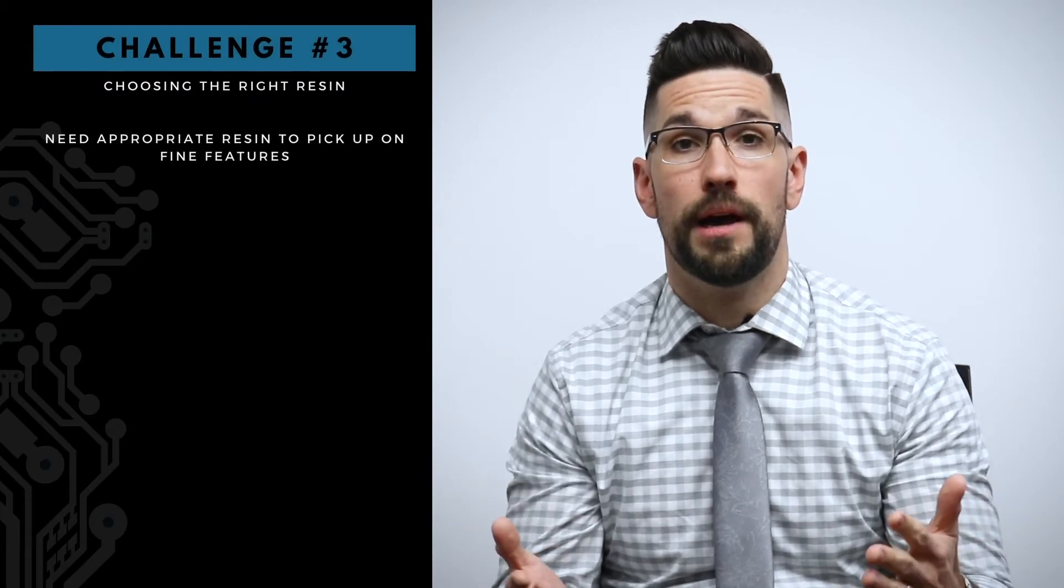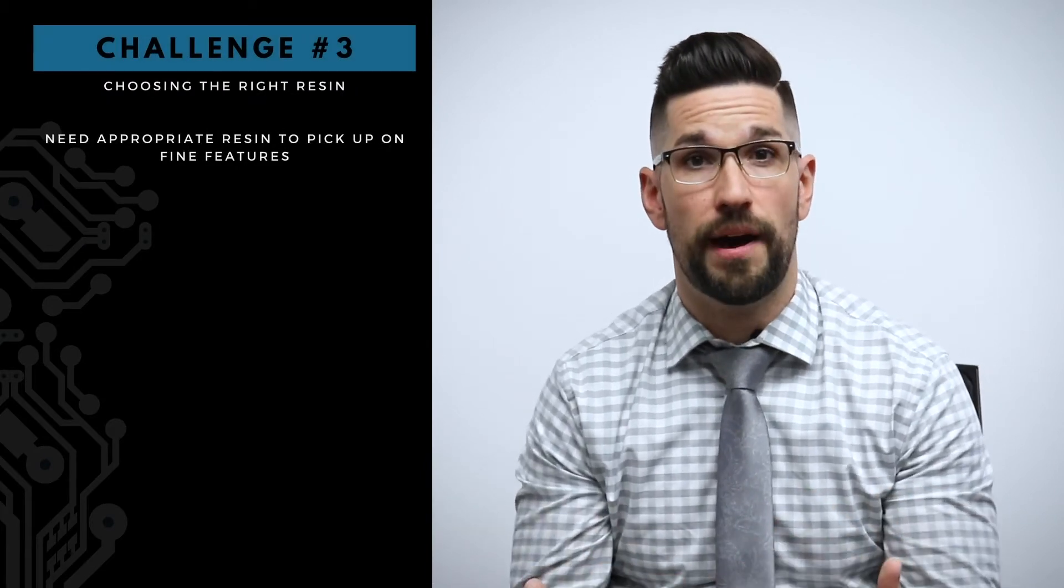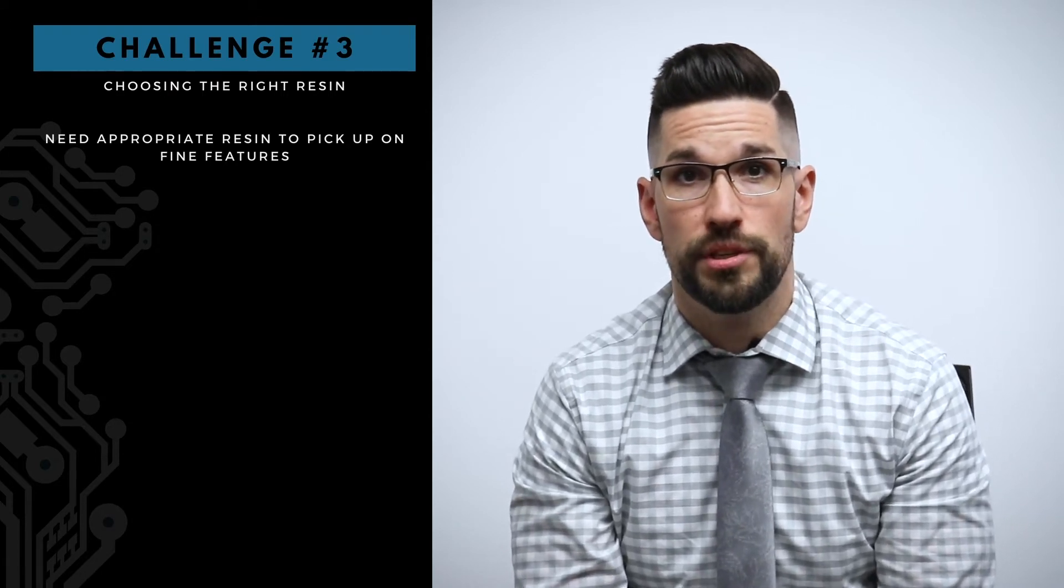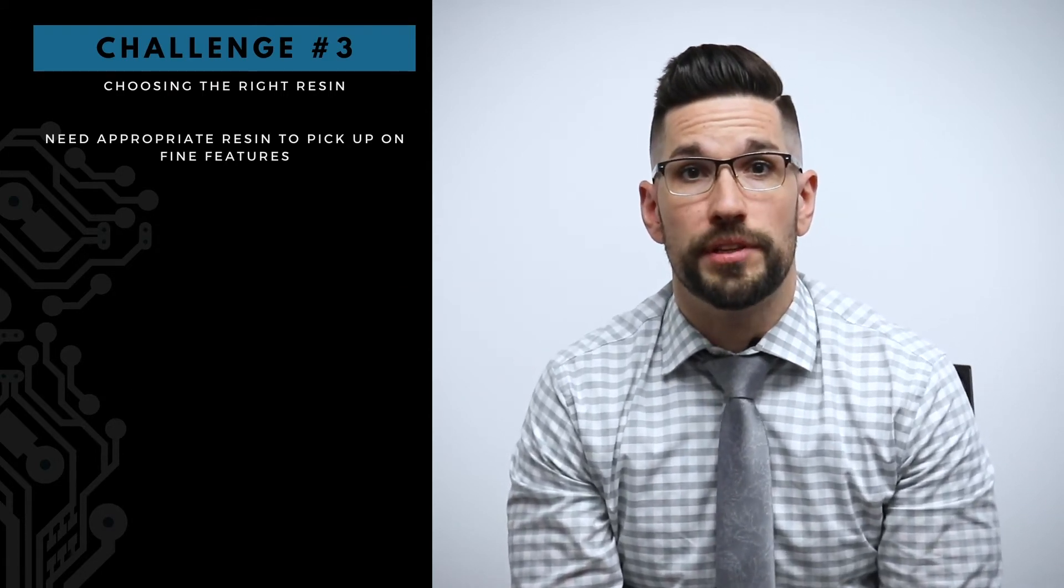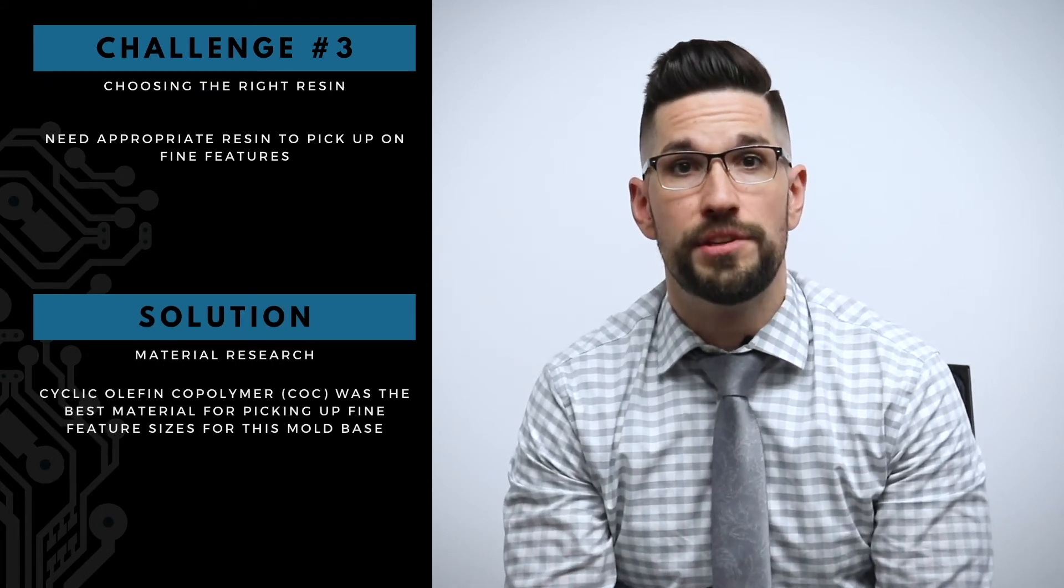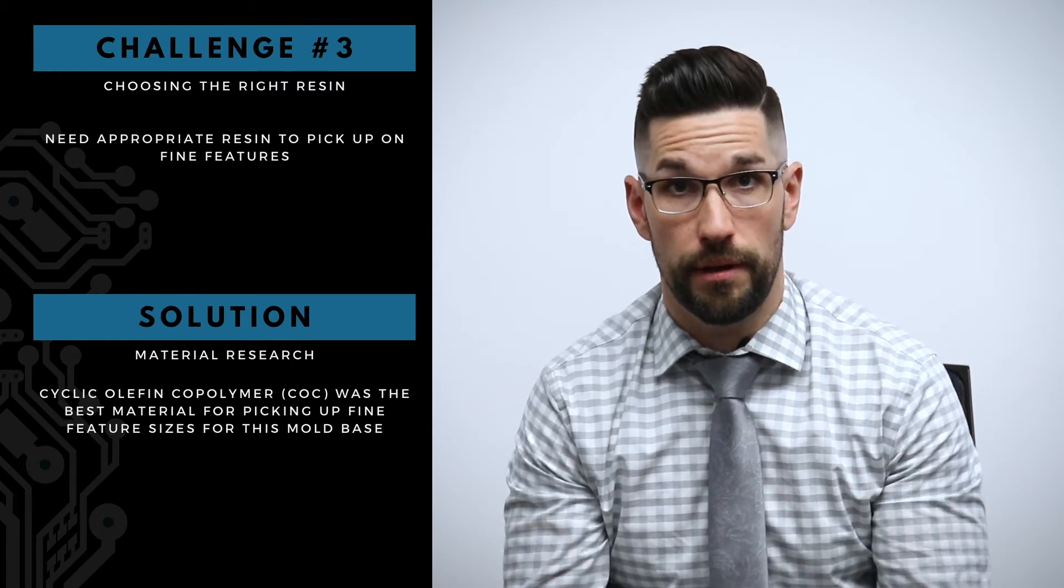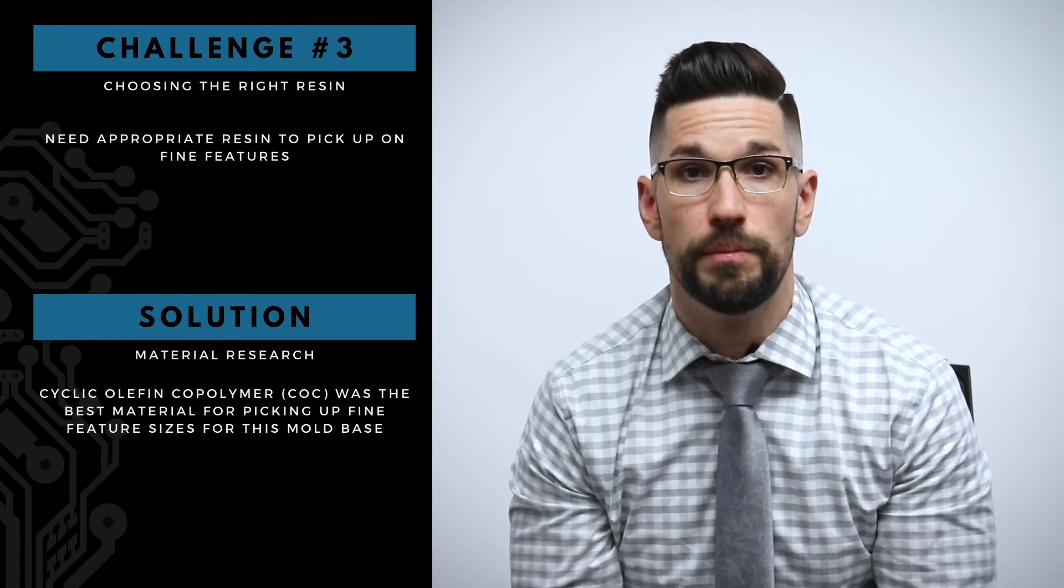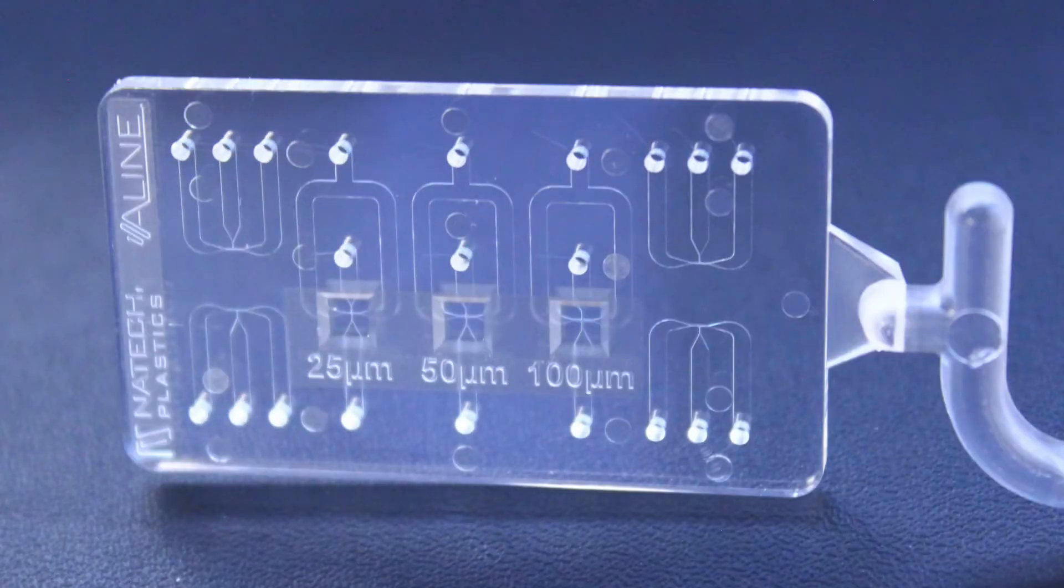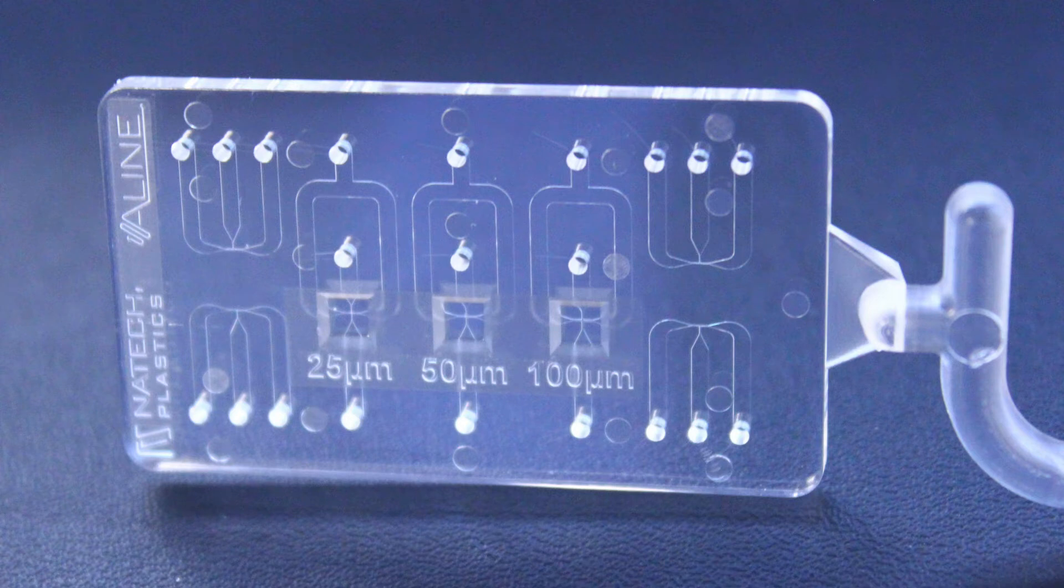So now I have a tool ready to go. And the question becomes, well, what resin can we use to pick up on features that are that fine? So we started doing some material research in the field of microfluidics and understood that the cyclic olefin copolymer, also known as COC, is one of the best materials for picking up very fine feature sizes from a shape, in this case, from our injection mold base. So we acquired some COC from Topaz, who's one of the premier suppliers of COC, and began doing some trials and molding some pieces.